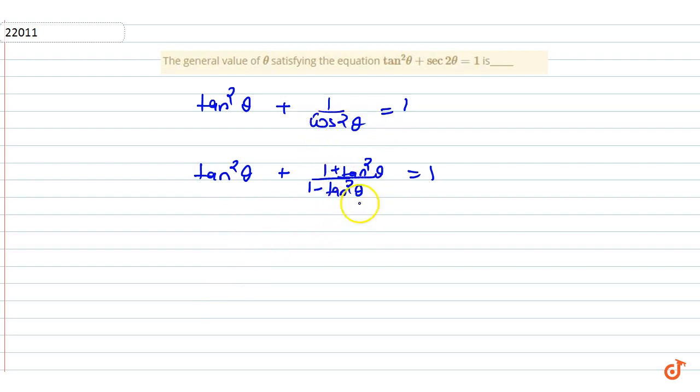I will take an assumption. Let tan squared theta equal to t. It will be easy to get. t plus 1 plus t upon 1 minus t equal to 1. Now we will take the same.